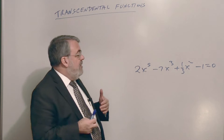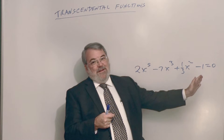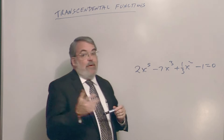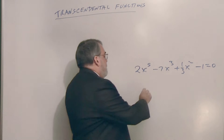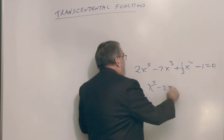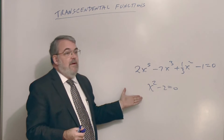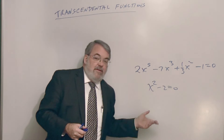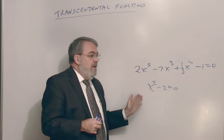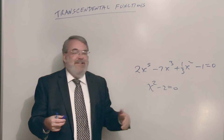A transcendental number is a number which is not the root of a polynomial like that. For example, the square root of 2 is not a transcendental number. Take x squared minus 2 equal to 0 — one of the roots is the positive square root of 2, the other is the negative square root of 2. So the square root of 2 is not a transcendental number.